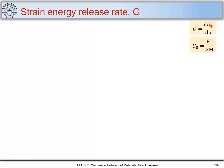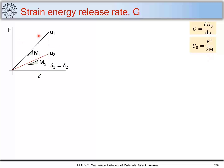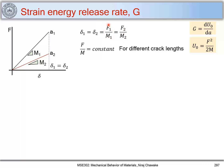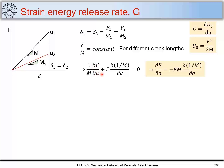We have G = dU₀/dA and U₀ = F²/(2M). In the fixed displacement scenario, delta₁ = delta₂, so F1/M1 = F2/M2. The ratio F/M remains constant for different crack lengths. Differentiating F/M with respect to crack extension A and setting equal to zero: (1/M)·(∂F/∂A) + F·∂(1/M)/∂A = 0. Thus ∂F/∂A = −F·M·∂(1/M)/∂A.